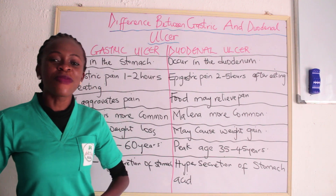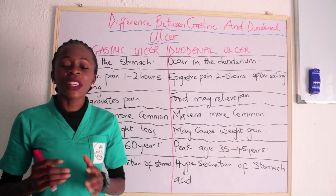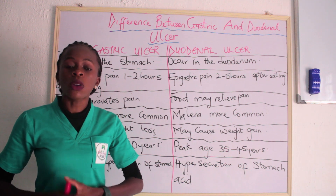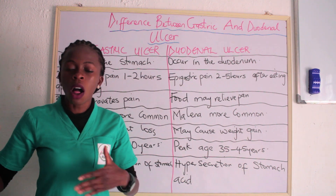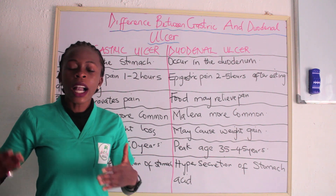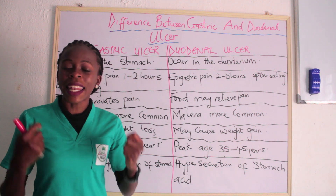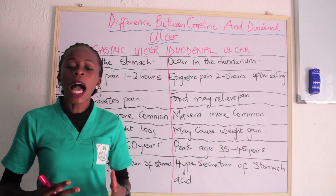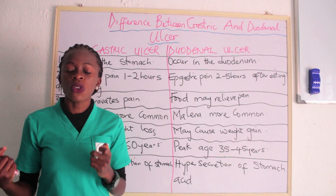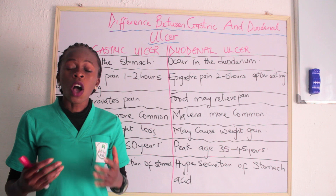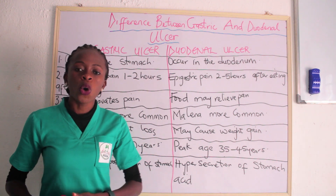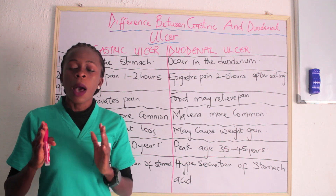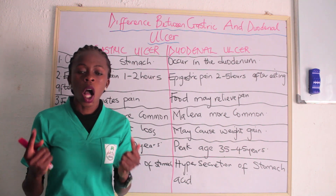Welcome back. Today we are going to be telling you the difference between gastric and duodenal ulcer. In our previous lecture, we talked about peptic ulcer. Peptic ulcer is an erosion of the mucosal lining. When it happens in the stomach, it is known as gastric ulcer. When it happens in the oesophagus, it is known as oesophageal ulcer. And when it happens in the duodenum, it is known as duodenal ulcer. This class is going to give you useful differences between duodenal and gastric ulcer.